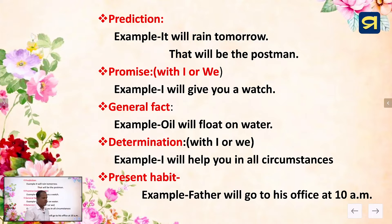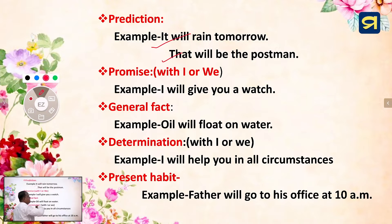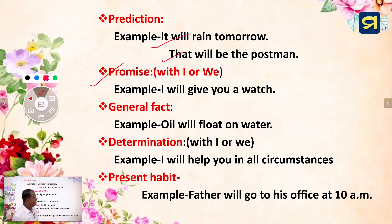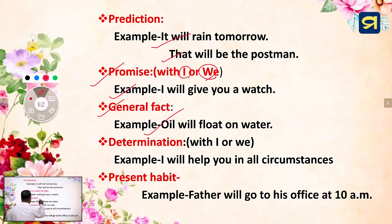Let's know other uses of modal will. Will can be used in the meaning of prediction. Example: 'It will rain tomorrow.' Then, 'That will be the postman.' This is the example of prediction. Again, will will be used in the meaning of permission with the subject I or we. Example: 'I will give you a watch.' Then, children, we have to know general fact. Will can be used in the meaning of general fact. What is the example? 'Oil will float on water.'